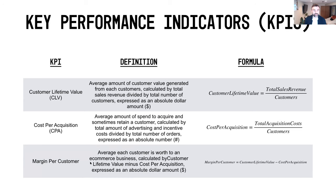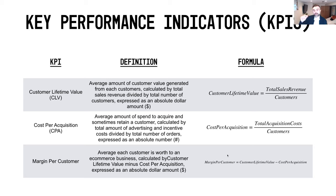Finally, margin per customer is the average margin calculated by taking the total lifetime value minus what it cost you — similar to a cost-of-goods-sold calculation — to arrive at total margin per customer. These three formulas are the key to understanding how much each customer is worth, not just at the top-line revenue level but at the bottom-line margin level. I'm a big believer in focusing on bottom-line margin because ultimately it drives profitability and puts more money in your pocket.